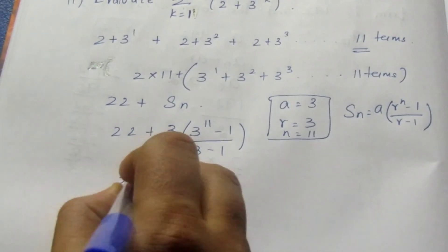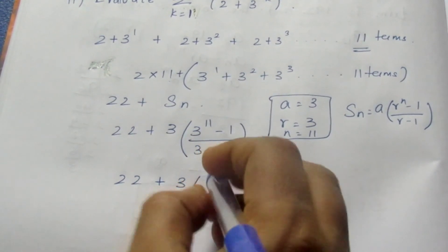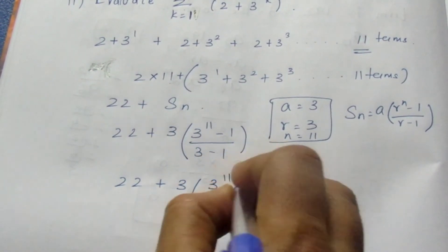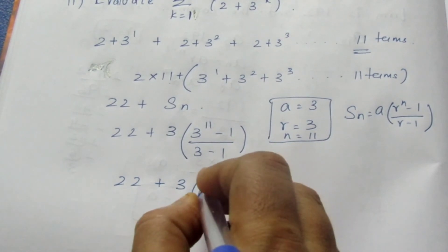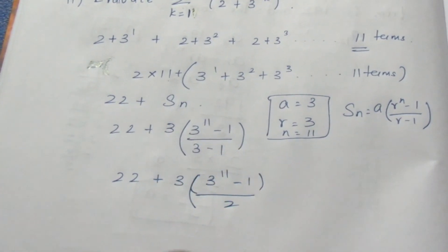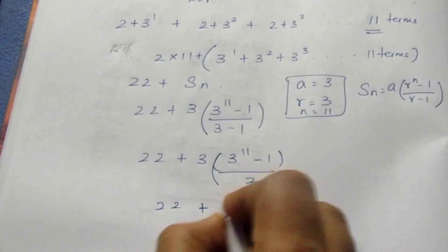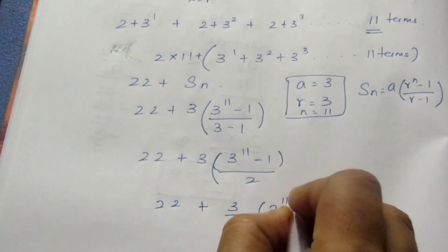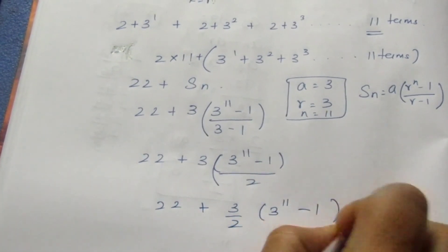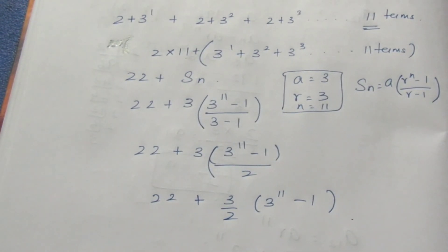Now this becomes 22 plus 3 into 3 power 11 minus 1, divided by 2. So this can be written as 22 plus 3 by 2 into 3 power 11 minus 1. No need to solve further because 3 power 11 is quite a big number, so you can leave it as it is. That is all with the sum. Thank you.